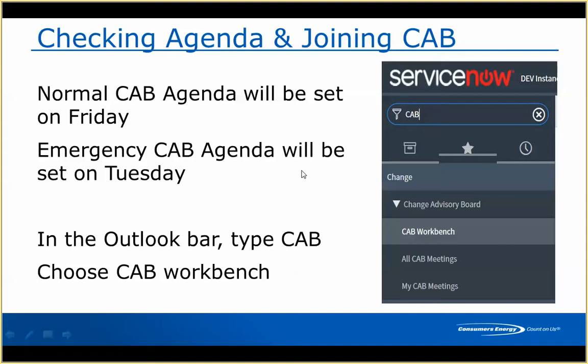Just to run through the rules: the normal CAB agenda will be set on Friday, since your tickets are due Thursday by 5 p.m. The emergency CAB agenda will be set on Tuesday, since that looks at emergency changes through Sunday. This gives people that 24-hour period to get those logged so we can make sure we're reviewing everything within the timeline.